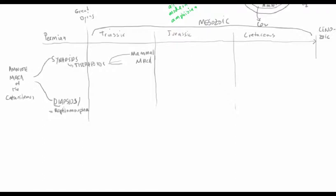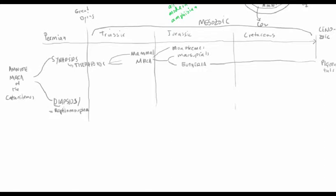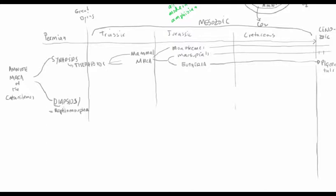Fairly early on there are a couple of lineages. The Monotremes are there, and from another branch — the Theria — we see the splitting off of the Marsupials. The Eutheria is the lineage that eventually diversifies greatly. We see Eutherians throughout the rest of the Mesozoic, but placental mammals don't radiate until after the Cretaceous-Paleogene boundary. Most mammals you're aware of — except duck-billed platypuses, echidnas, and marsupials — had their major radiation after the Cretaceous-Paleogene boundary.